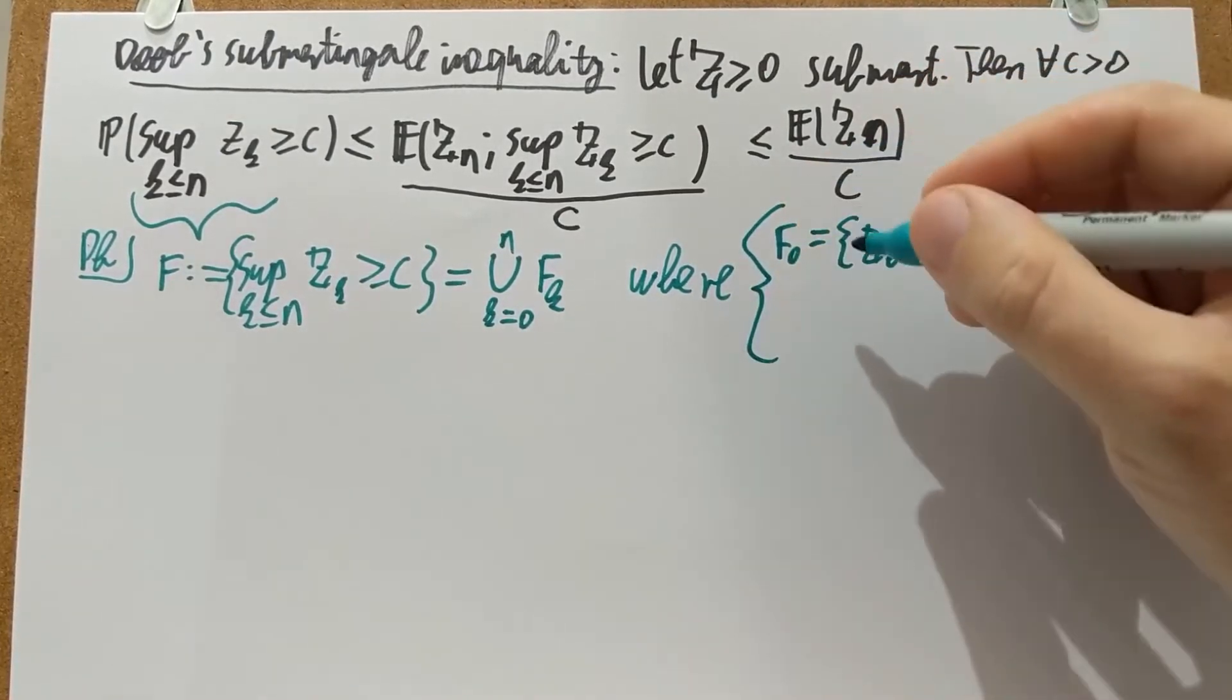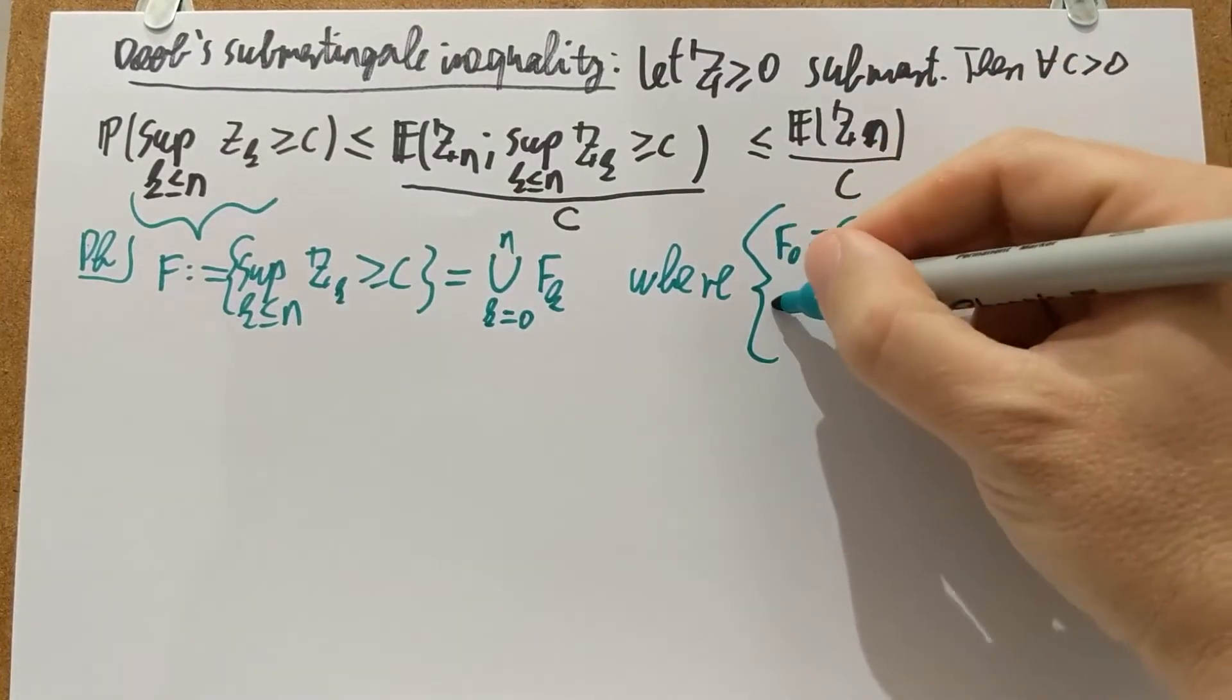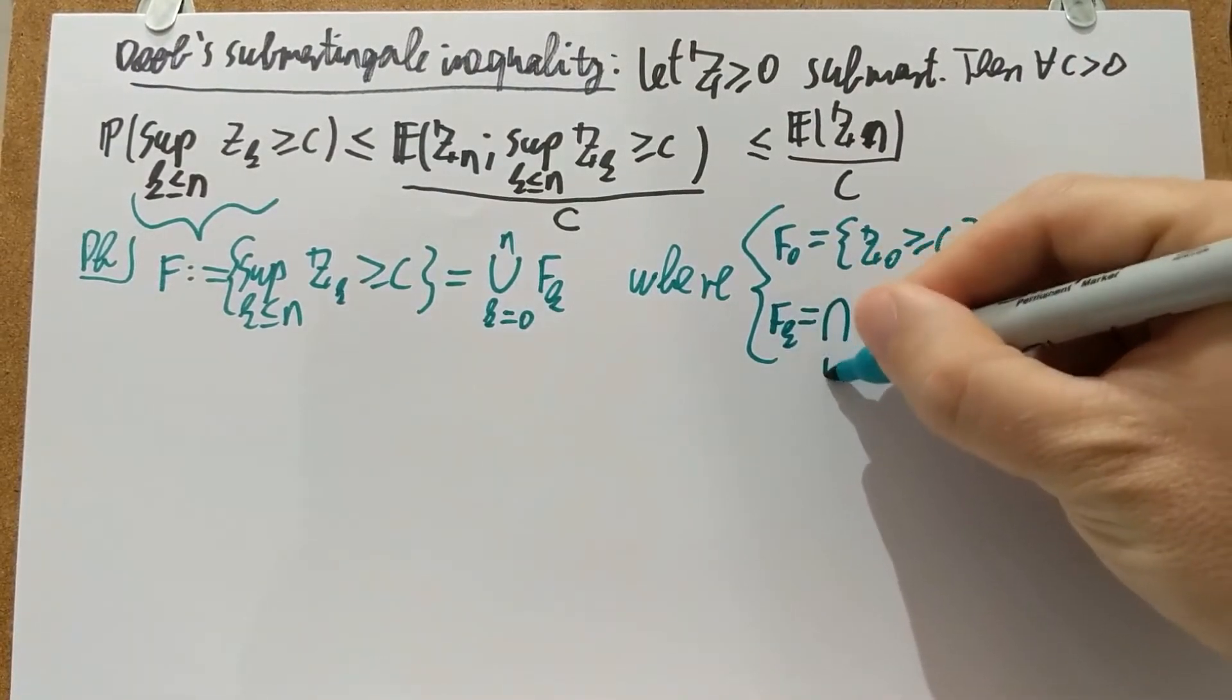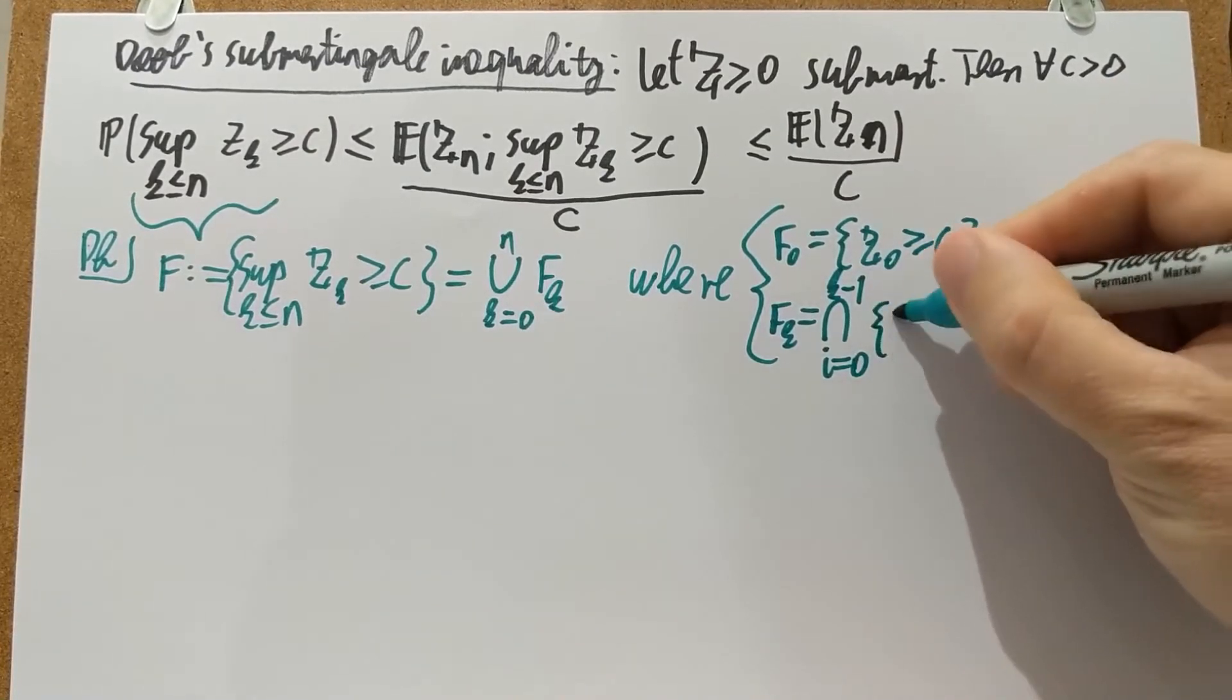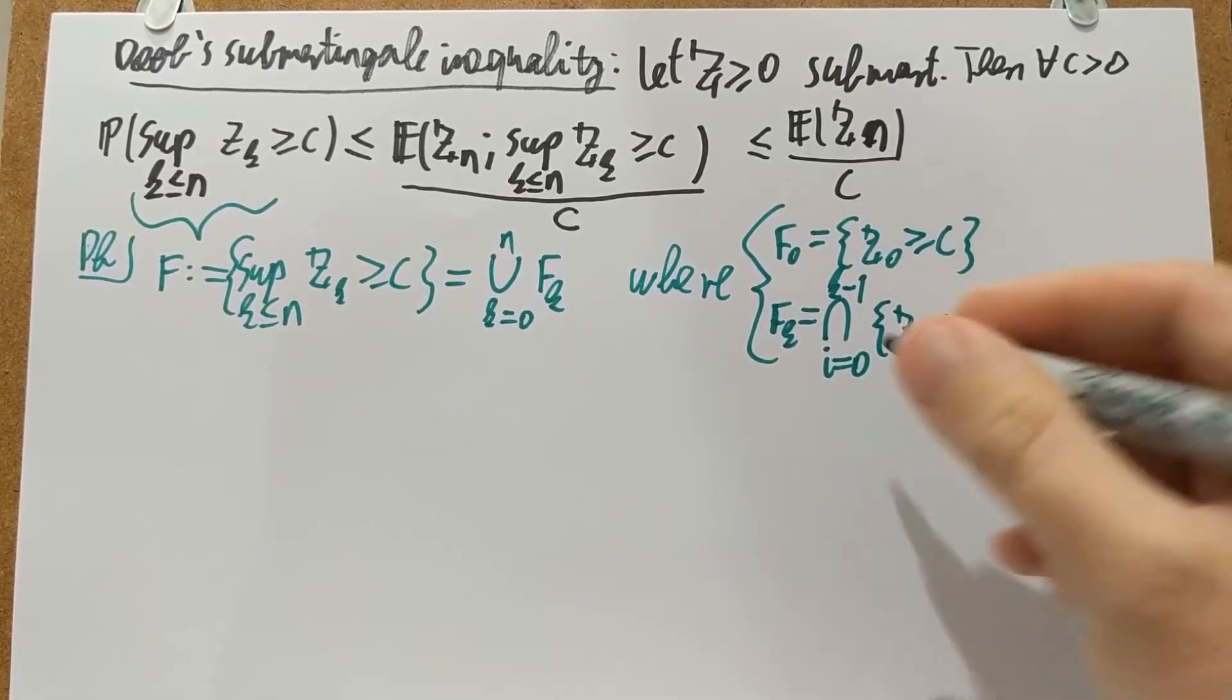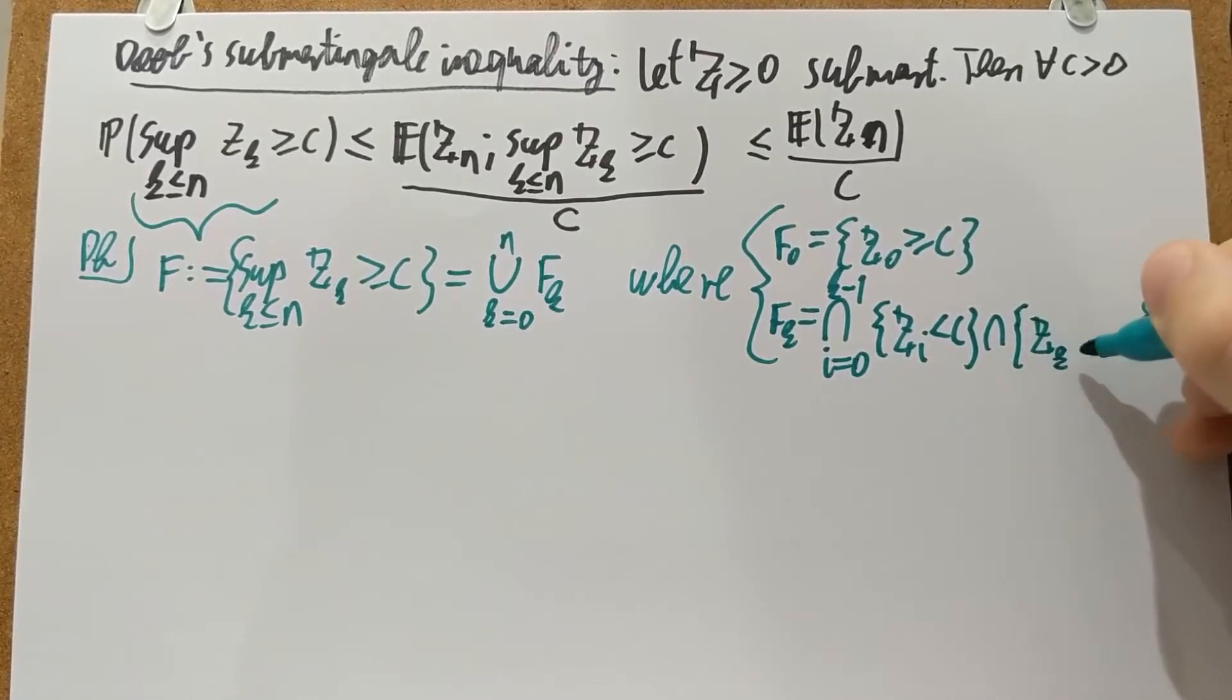So F_0 is going to be the event that already Z_0 reached level C. And for K larger than 0, so for positive K's, F_K is going to be the event that none of the previous ones before K reached level C. So Z_i is smaller than C for every i up to K, but then on the K-th term, Z_K is actually reaching level C.